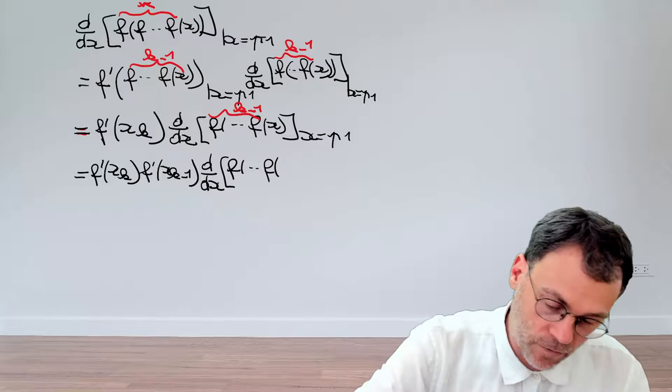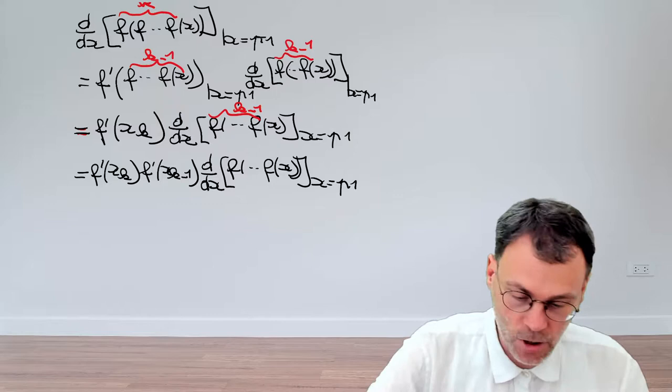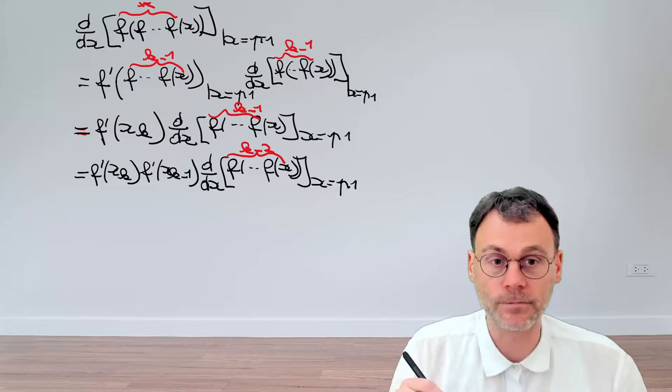And then we have d/dx of a number of applications of f evaluated at the point p1. How many applications of f do we have? This time we have k minus 2 applications.